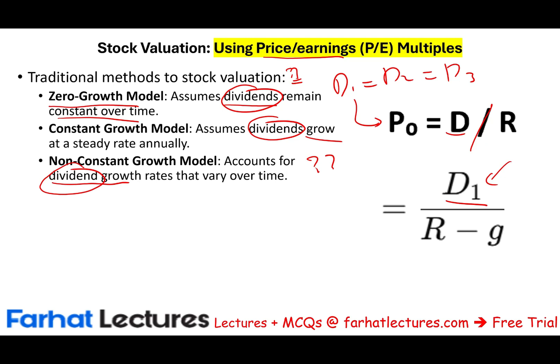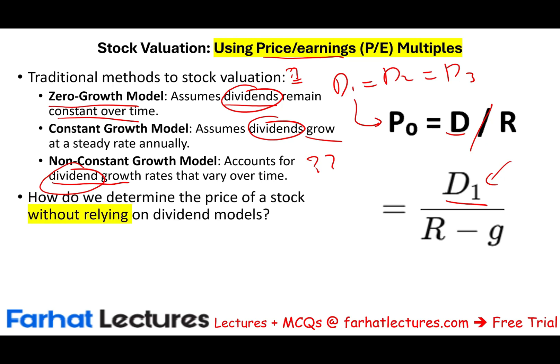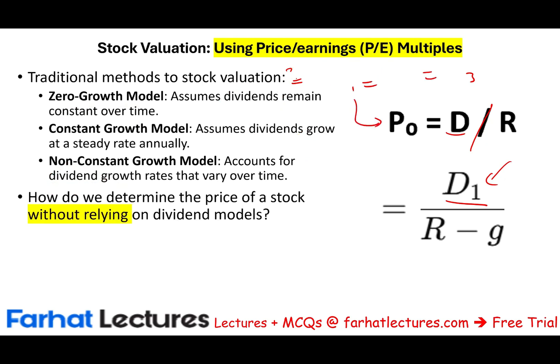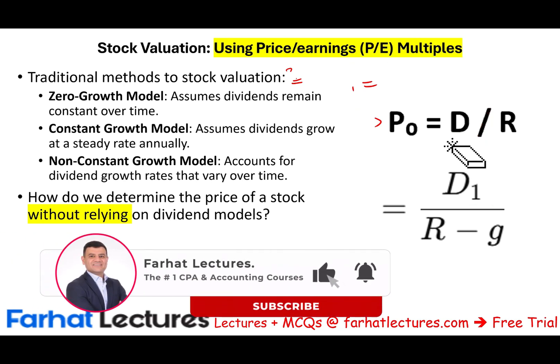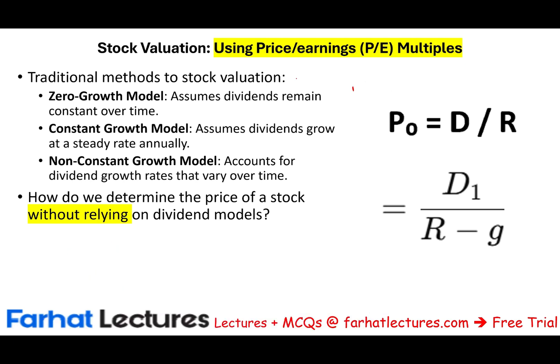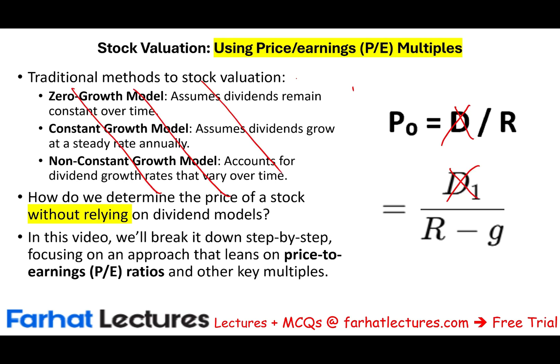How about when companies don't pay dividends? How do we determine the stock price then? Companies may not pay dividends for many reasons: they don't have profit, or they want to keep profits for internal growth. In such cases, we cannot use those traditional methods, so we utilize other figures such as price-to-earnings ratios and other key multiples.